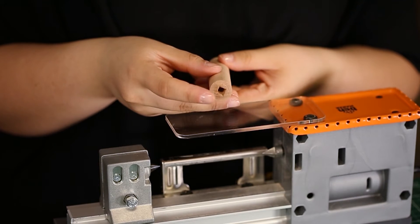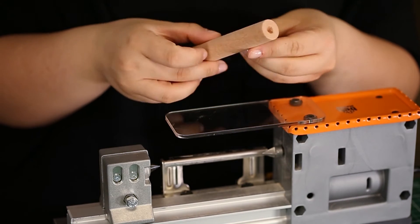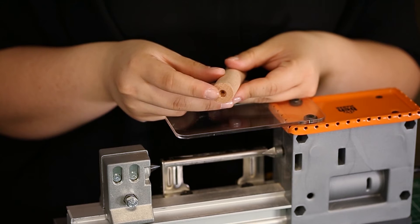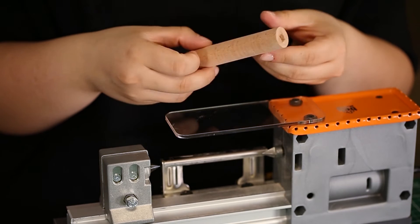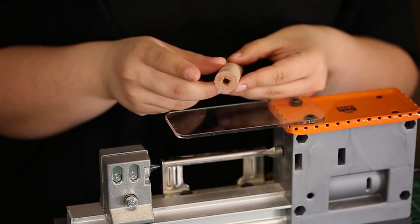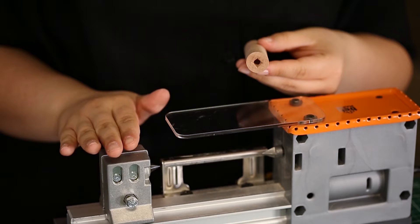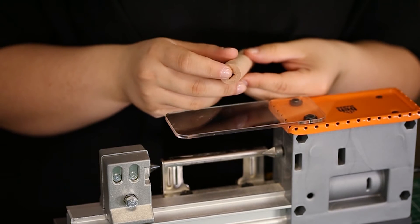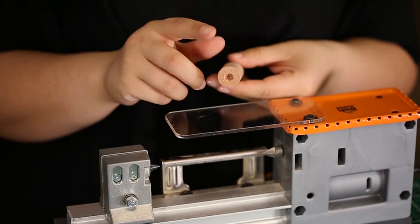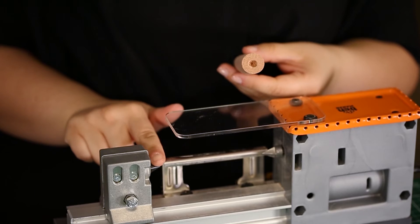Before starting, I want to show the difference between two sides of the cylinder. As you see, one of the sides has a circle and the other one has a square on it. While putting the cylinder onto the lathe, the side which has a square will fit on that point and the other side will fit on that point.